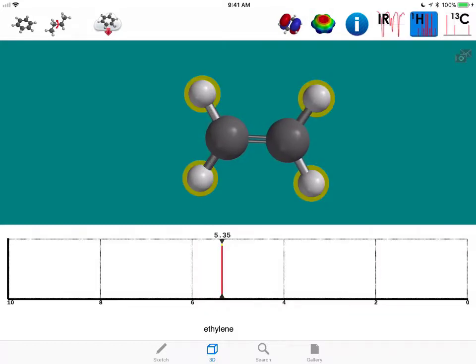So let's look at the proton NMR. And so the molecular formula C2H4 in ethylene, the four hydrogens all form one unique set.